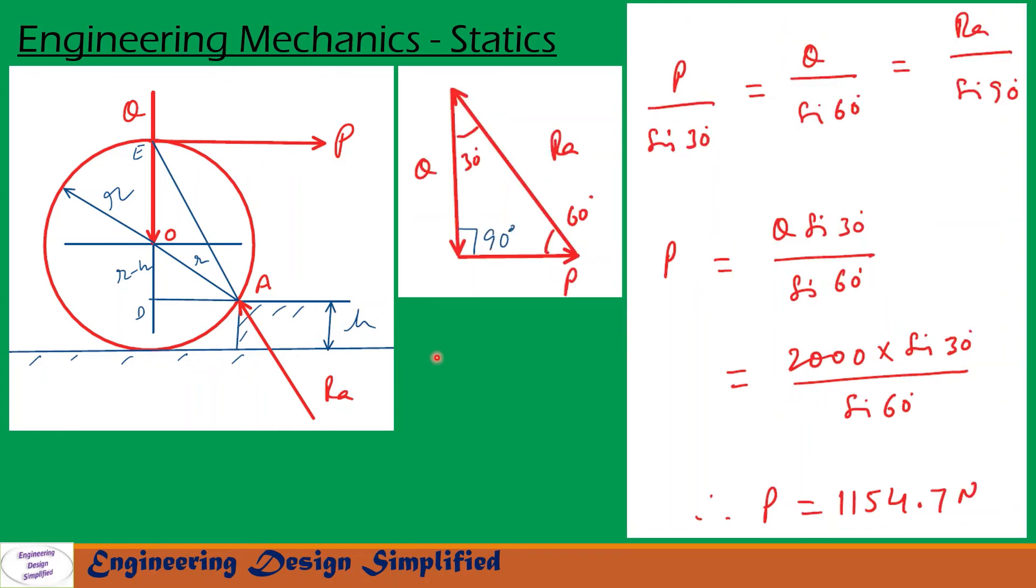Now let us draw a force triangle. First, Q is drawn parallel to this arrow. At the end of Q, P is drawn parallel to this direction. From the end of P, RA (the reaction) is drawn parallel to this line.